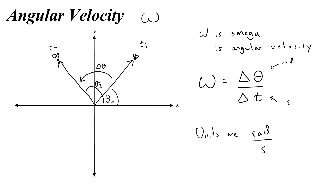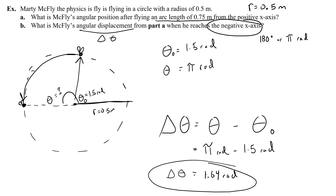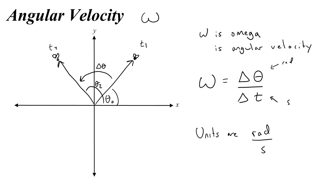Technically, because the radian is the ratio of arc length to radius the unit goes away — like in our example where 0.75 meters divided by 0.5 meters, the meters canceled out. So the radian isn't really a unit, it's almost a placeholder. So it's very common to call angular velocity radians per second or just per second, which is known as a hertz. This is often also considered to be frequency, but we'll talk more about that later.